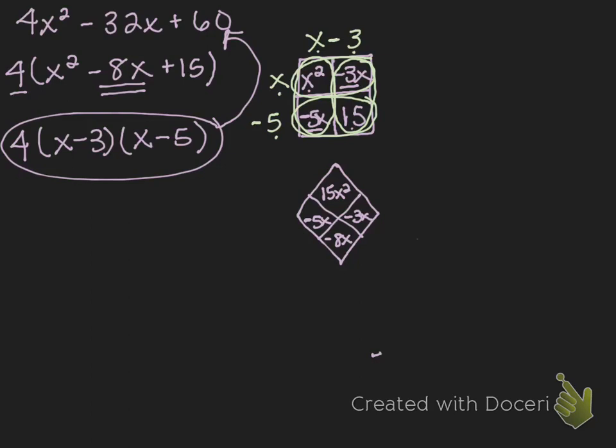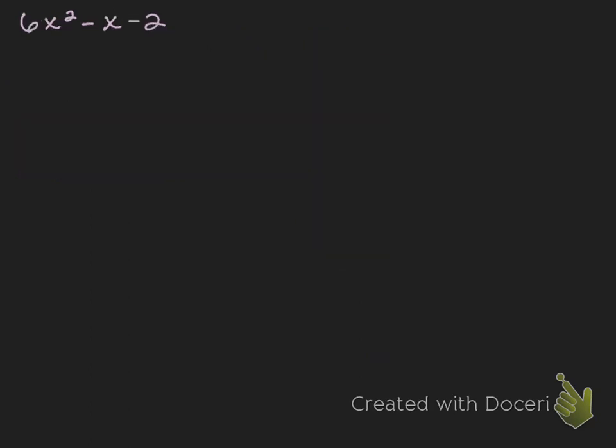Now that we've looked at that example, let's look at another one. The expression we're going to look at now is 6x squared minus x minus 2, and we're going to go through those same steps of factoring. The first thing we always want to check is: can we divide all the terms by something they have in common? Looking at 6x squared, x, and 2 — 6x squared and x have an x in common but 2 doesn't; 6x squared and negative 2 have a 2 in common but x doesn't. So there is no greatest common factor, and we go straight into the generic rectangle.